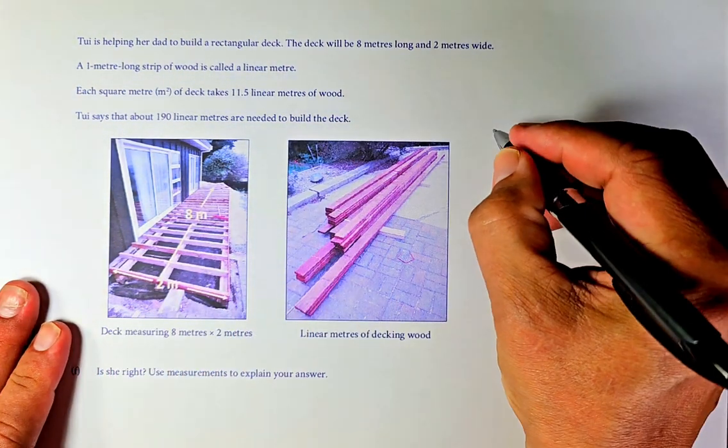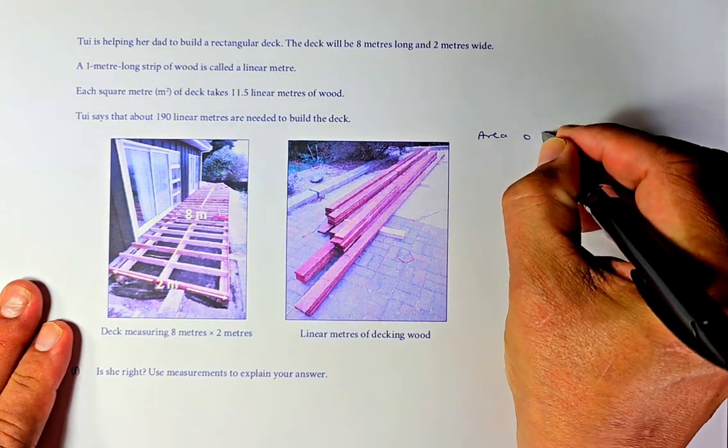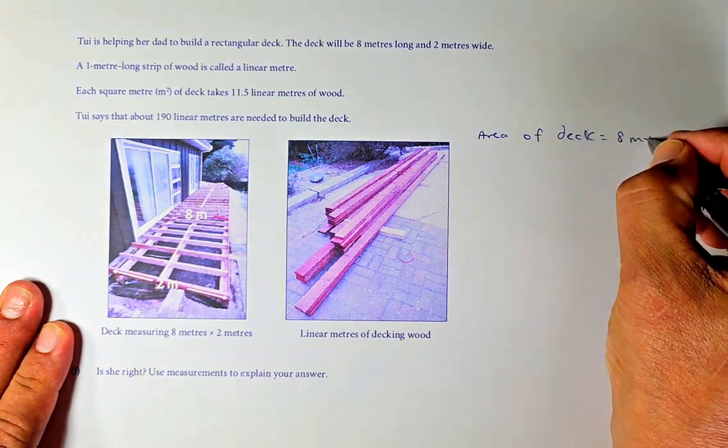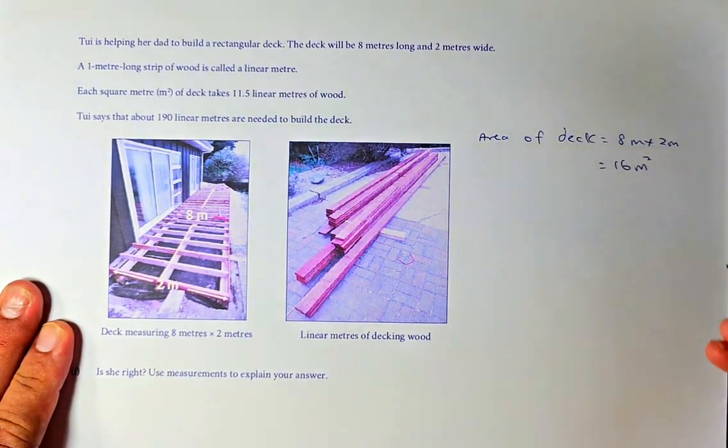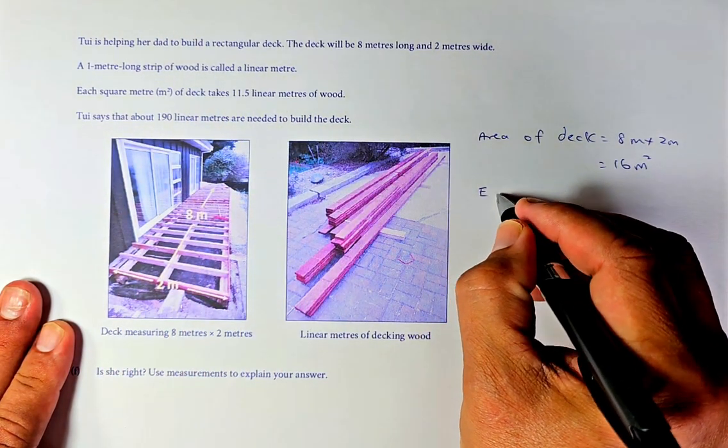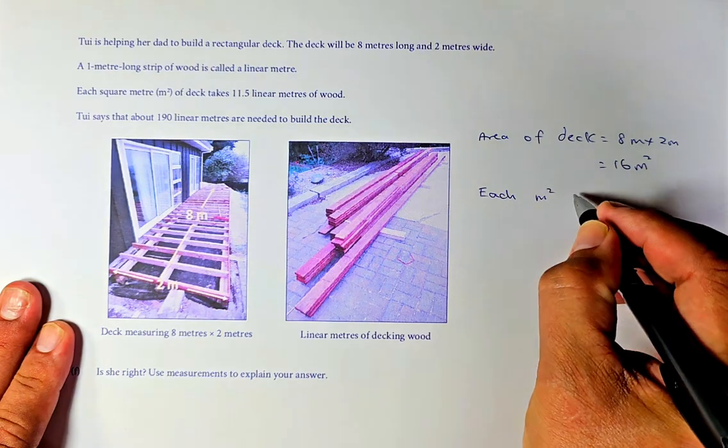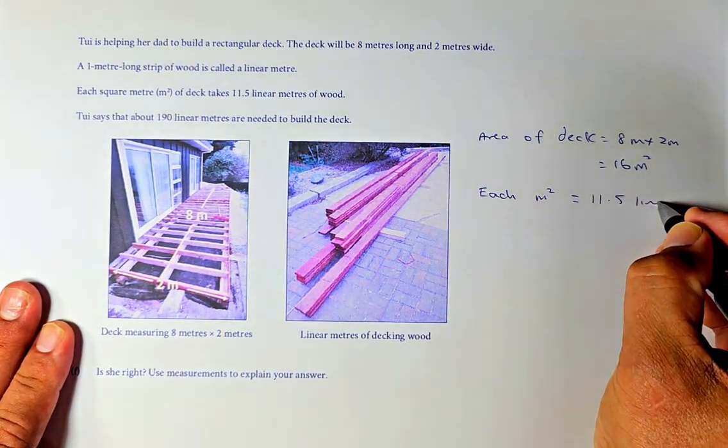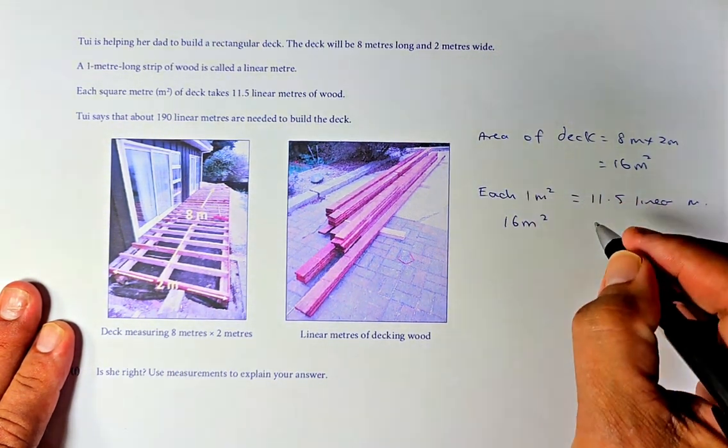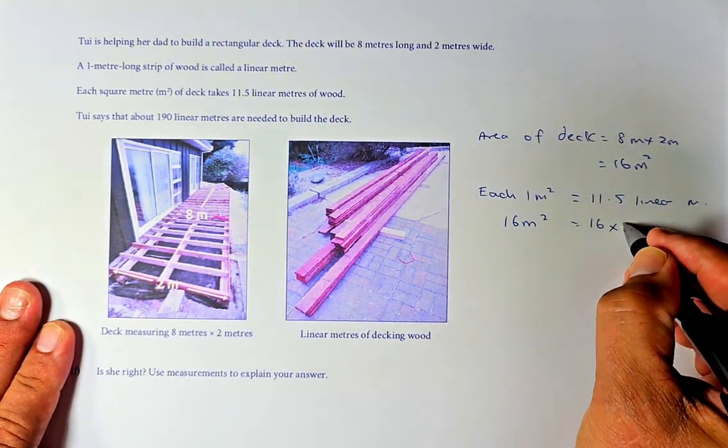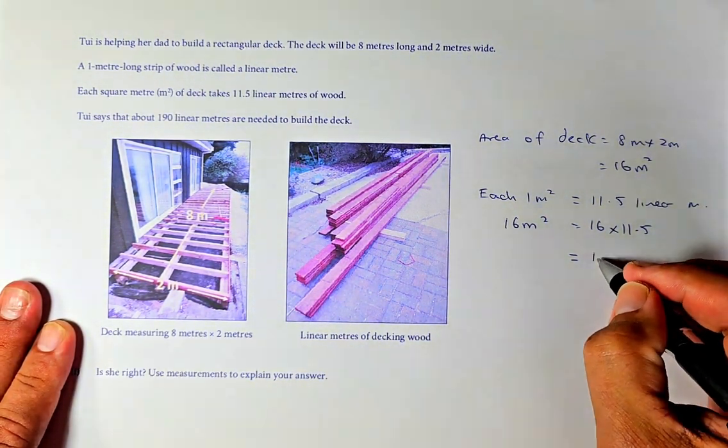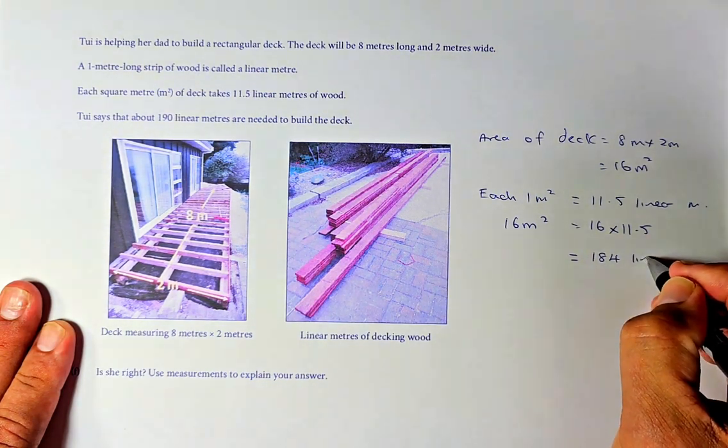So, first we need to find the area of this deck. So, area of deck, okay, is going to be 8 meters by 2 meters. So, that will come up to 16 meters squared. Okay, so each meter squared, we read here, each meter squared requires 11.5 linear meters. So, to get 16 meters squared, so 16 times 11.5, use your calculator and the answer is going to be 184 linear meters.